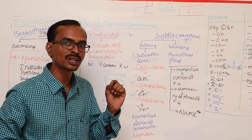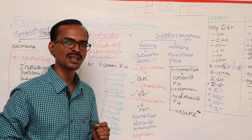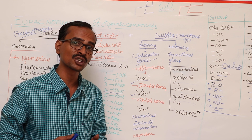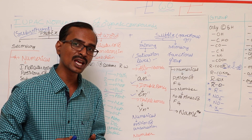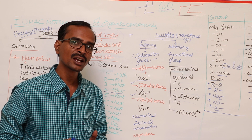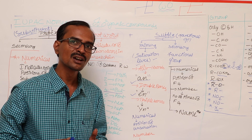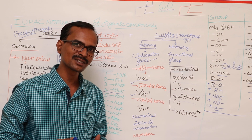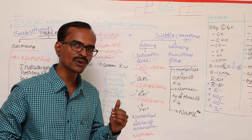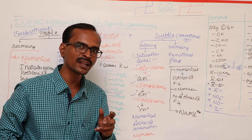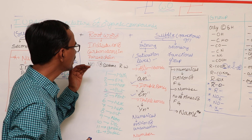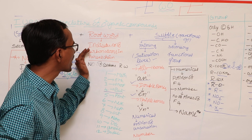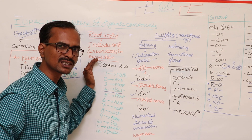The root word gives the information about the number of carbon atoms in the parent chain. In successive lessons, we will discuss about the selection of the parent chain, how to select the parent chain, how to number the parent chain, how to consider the functional group present in the parent chain — everything will be discussed in successive videos. First, let us have a basic idea about the root word. As I said, root word gives the information about the number of carbon atoms in the parent chain.